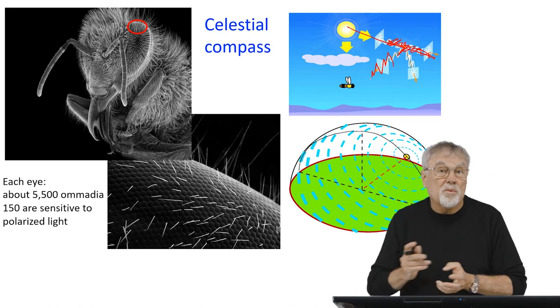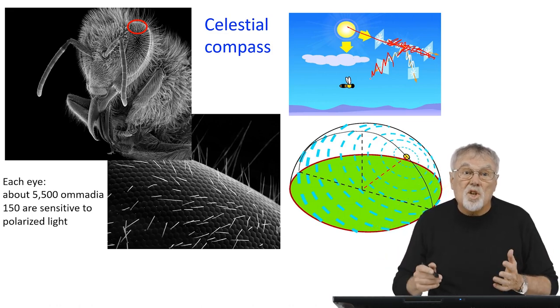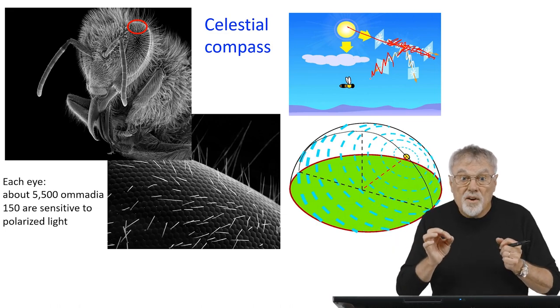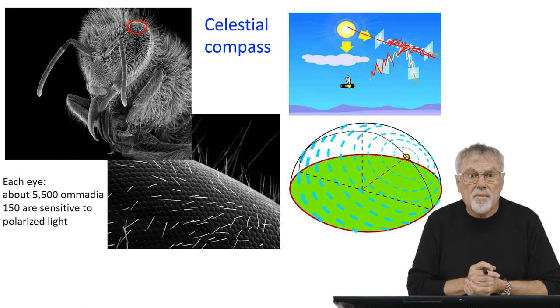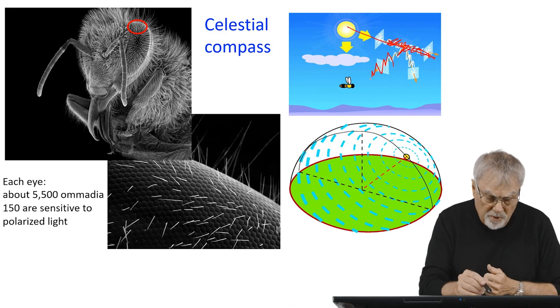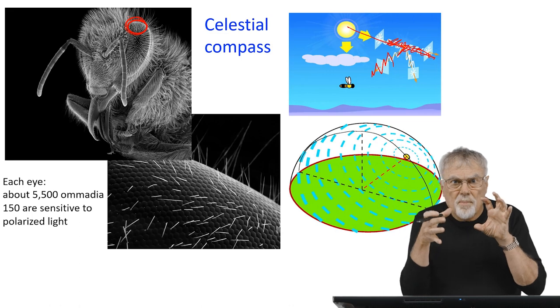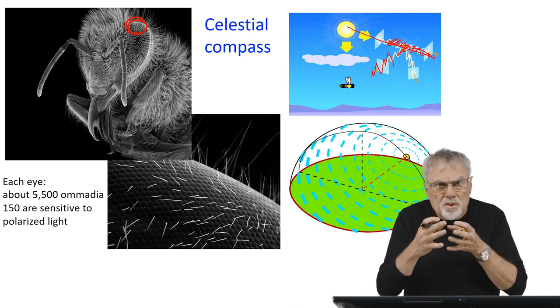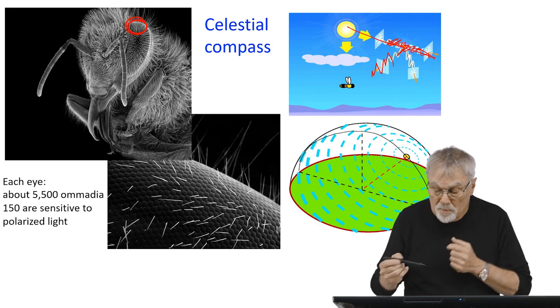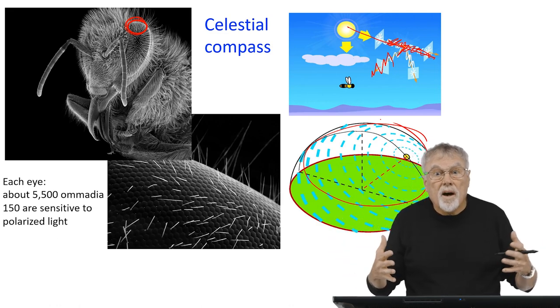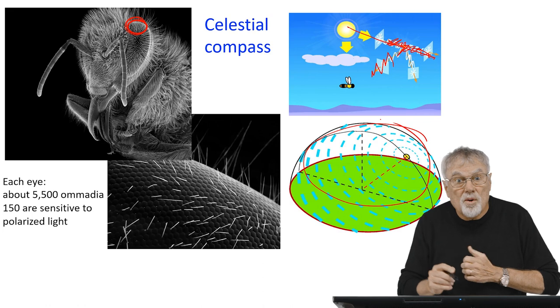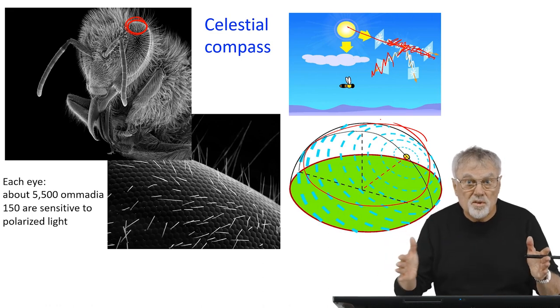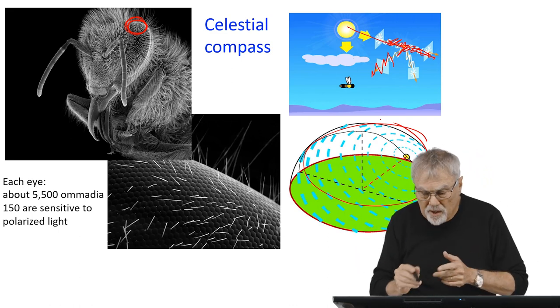They do this with some special receptors that they have on their eyes. So fundamentally, each eye of a bee has about 5,500 ommatidia. That's worker bees. Of these 5,500 ommatidia, there's about 150 of them that are located at the top of the eye. They're in a patch up at the very top of the eye, and these are sensitive to polarized light. Also, they're very sensitive to ultraviolet. Ultraviolet is the best wavelength to actually show the polarization to them. And ultraviolet will penetrate the cloud cover so that they can continue to have a polarized view of the celestial dome.